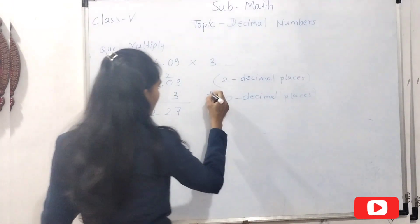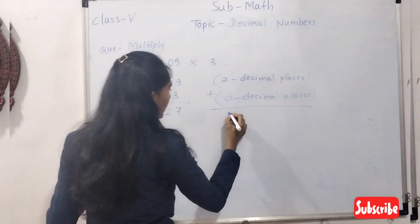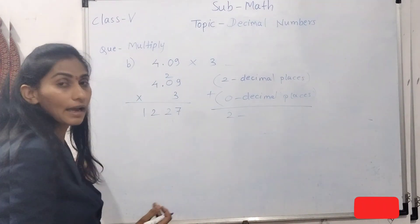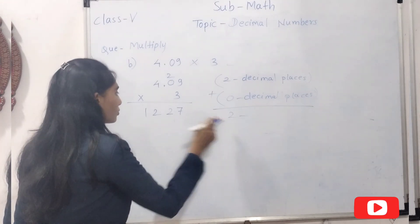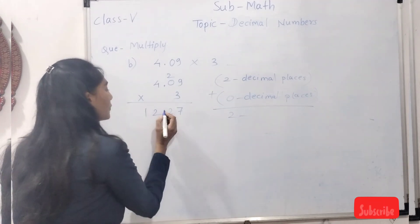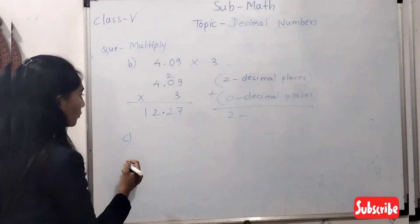Now find out the total decimal places in both numbers. 2 plus 0, we get 2 decimal places. So count from right and put the same number of decimal points in the product. So 2 decimal places: 7 and 2, then put the decimal point here.